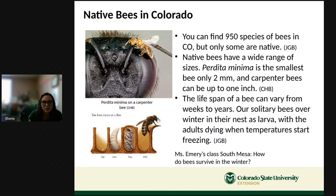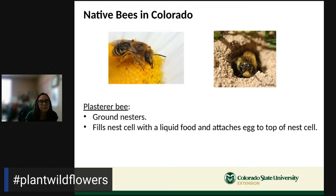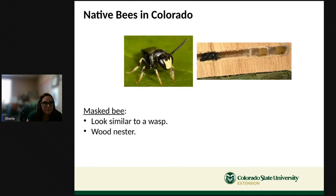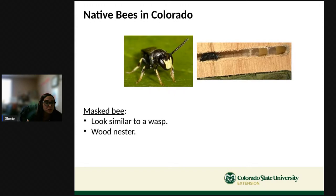Let's look at some bees you might see around here. The plasterer bee is a ground nester — it digs holes and fills nest cells with liquid food for the larva to eat through winter. The masked bee looks a little like a wasp but it's a bee; it nests in wood like trees, logs, or stumps. The miner bee is another ground nester — pretty big and shy. They're really only active early in spring, which is why having flowers blooming all season is important.